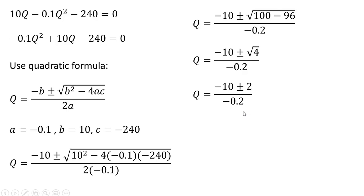We're going to get two roots. The first root, -10 - 2, gives us -12 in the numerator. And once we do the division here, we get Q = 60. And for the second root, -10 + 2, leaves us with -8 in the numerator. And this will simplify down to 40.